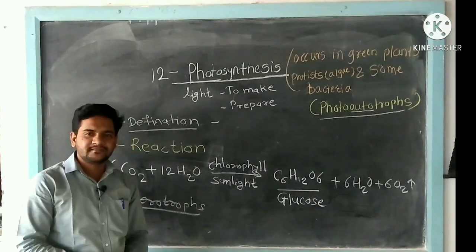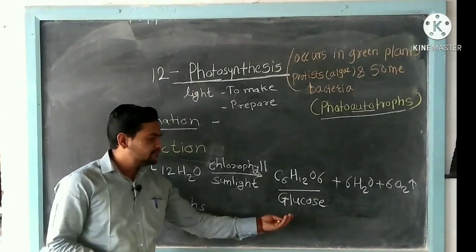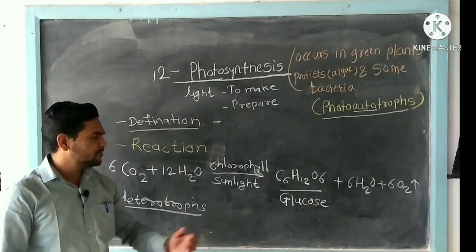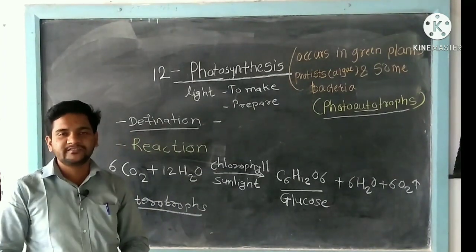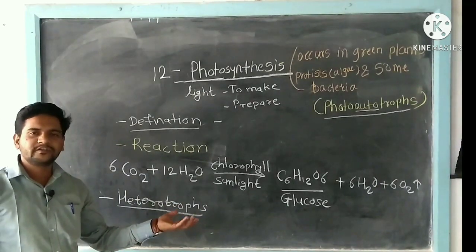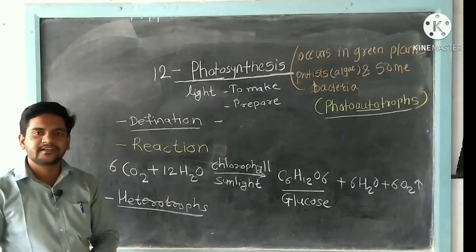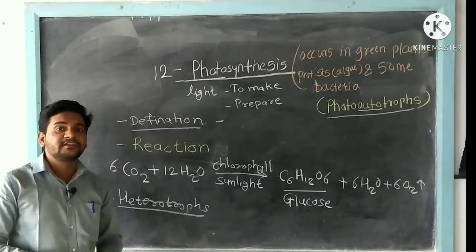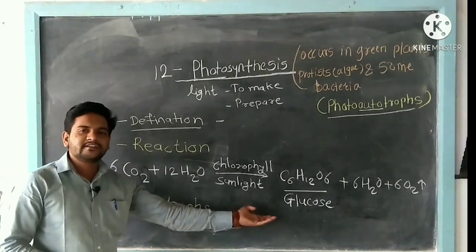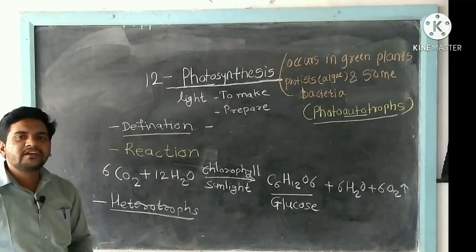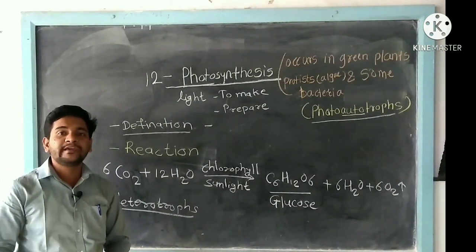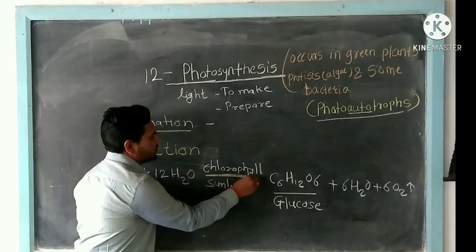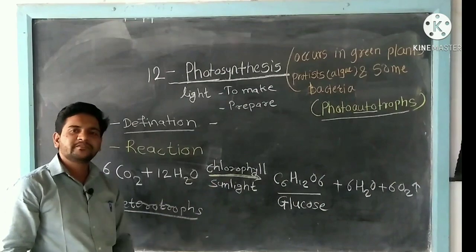Plants produce organic food, and this benefits human beings directly or indirectly. Directly, we consume plants as food. Indirectly, herbivores depend on plants, and energy is transferred through the food chain. Heterotrophs are those organisms which cannot make their own food and are totally dependent on others for energy.